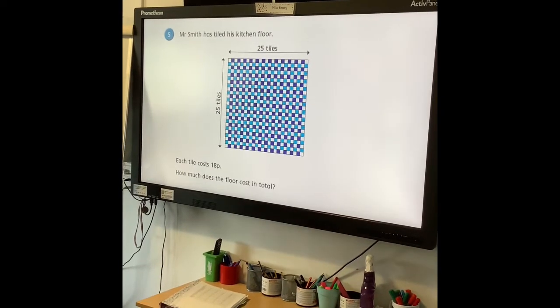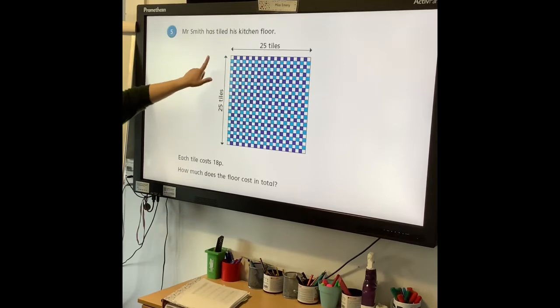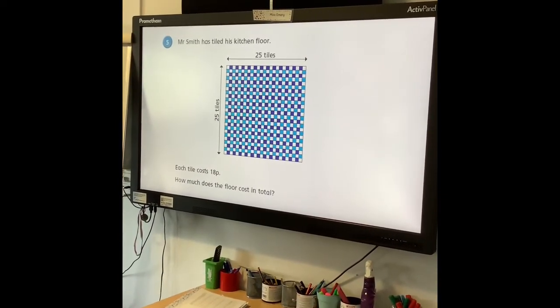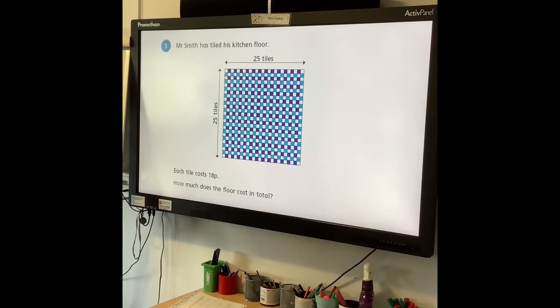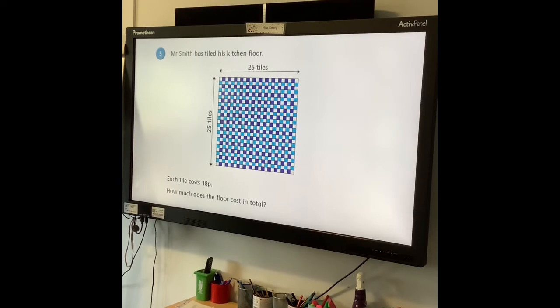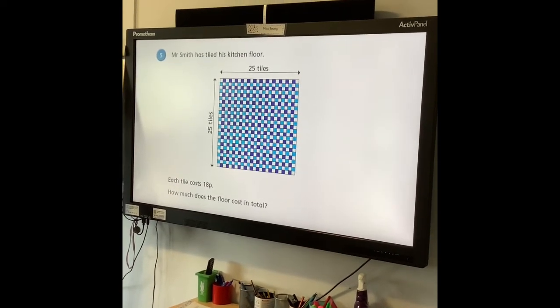After that, you've got, Mr Smith has tiled his kitchen floor. You've got 25 tiles that way, 25 tiles that way. Each tile costs 18p. How much does the floor cost in total? So, again, think about the steps you have to take. Remember to pause the video between them and have a go at working them out.